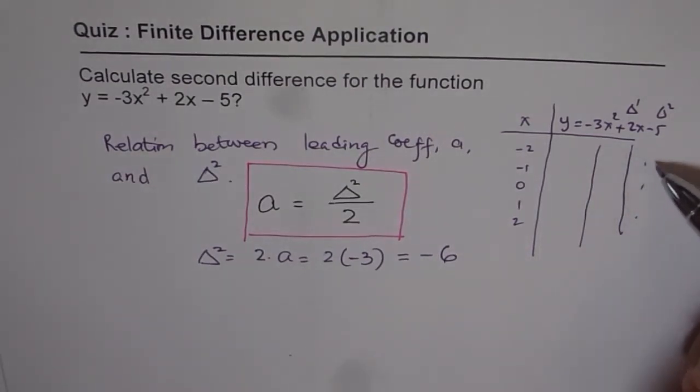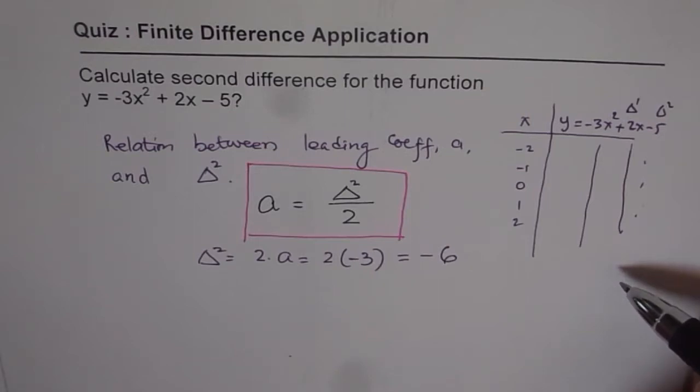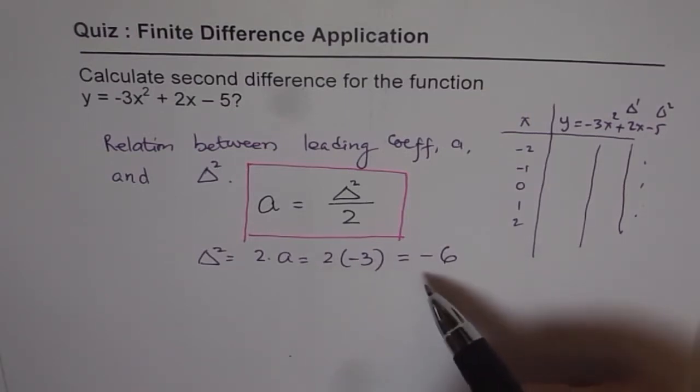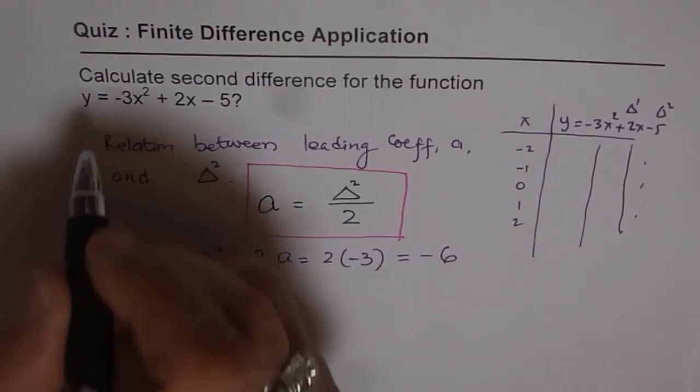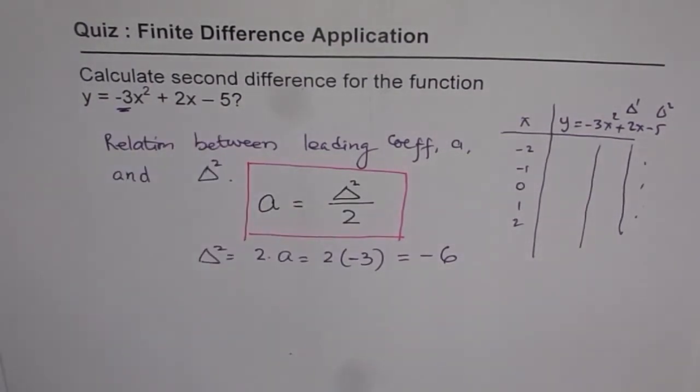So when you do all these calculations, the only number you are going to get here is going to be 2 times minus 3. That leading coefficient A is minus 3 for you. So you will get 2 times minus 3 and your answer will be minus 6. And that is how you get second difference from the given equation.